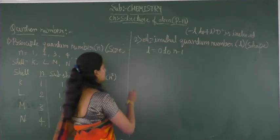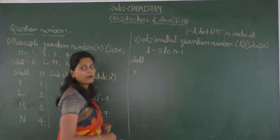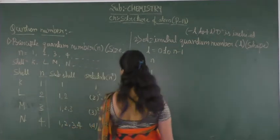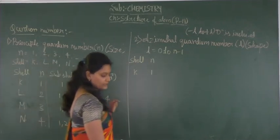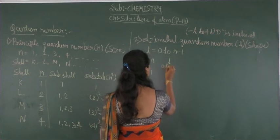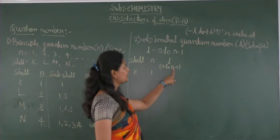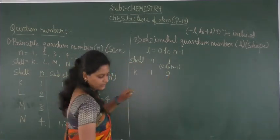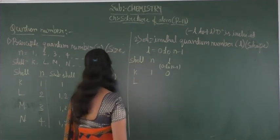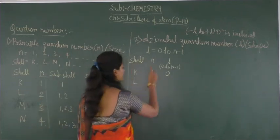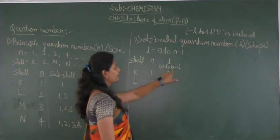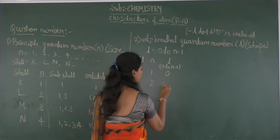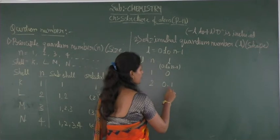When we consider the shells: for K shell, n=1, so the l value varies from 0 to n−1, which is 1−1=0. So l=0 only. For L shell, the principal quantum number is 2, so l varies from 0 to 2−1=1. The values of l are 0 and 1.